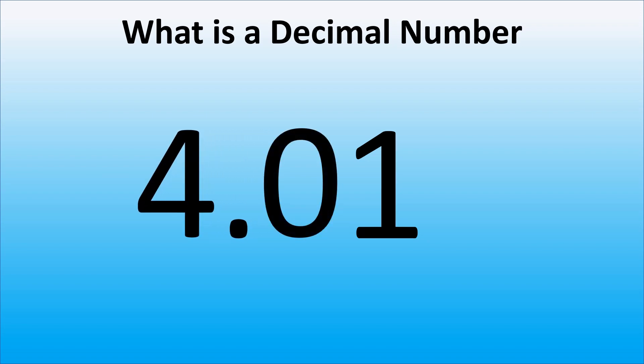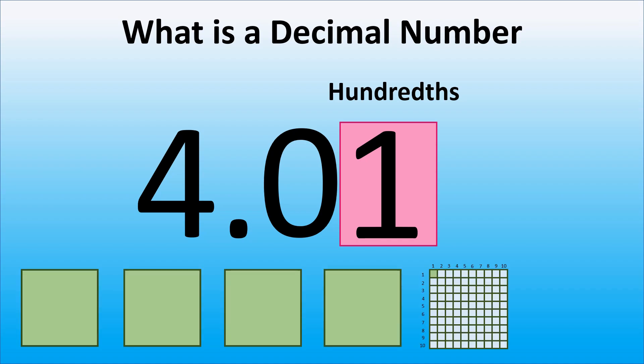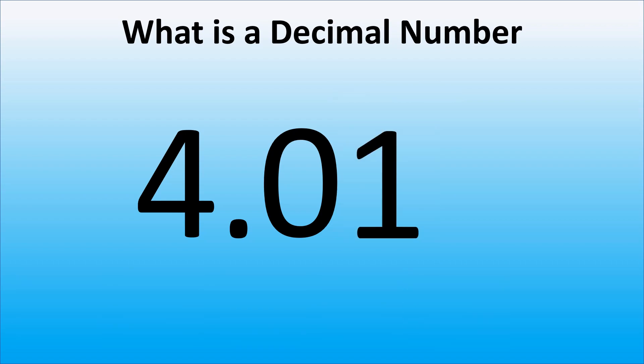What if there is a second digit after the decimal point? If there are 2 digits to the right of a decimal point, the denominator of a fractional part is 100. Thus, here we have 4 wholes and 1 hundredth. In other words, it means that we have 1 part out of a total of 100 equal parts.